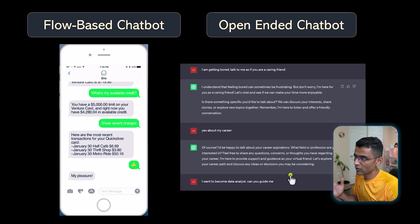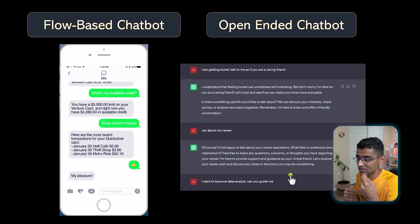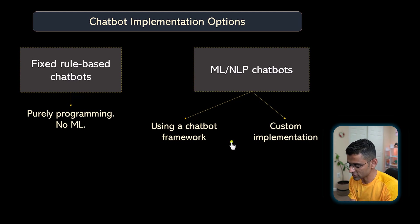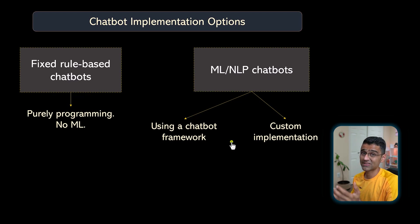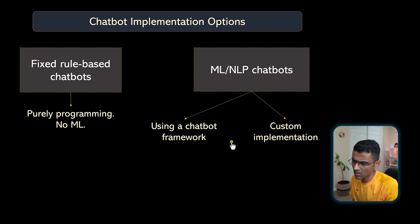So these are the two broad categories of chatbots: flow-based or rule-based chatbots, and open-ended chatbots. On the left side you have a specific goal; on the right-hand side you are talking about different topics and even changing the conversation theme, and the chatbot can still handle it. For implementation: fixed rule-based chatbots don't need any coding beyond a decision tree with if-else statements in Java or any programming language. For NLP-based chatbots you can use a framework such as Google's Dialogflow or do a custom implementation.